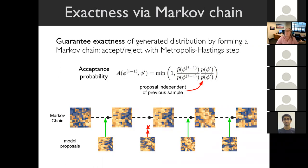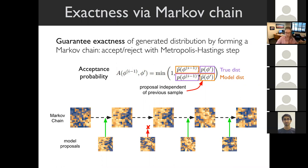To guarantee exactness of the generated distribution, we compose all samples into a Markov chain and do an accept-reject step with probability given by ratios of the true distribution and the model distribution. So we have an embarrassingly parallel sampling procedure: sample from the easy distribution, feed through the model, get a configuration out the other side, then compose those into a chain accepting or rejecting each sample based on the previous one—giving us the right asymptotic probability distribution.